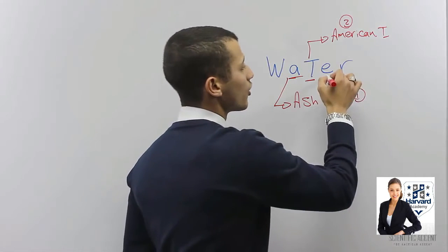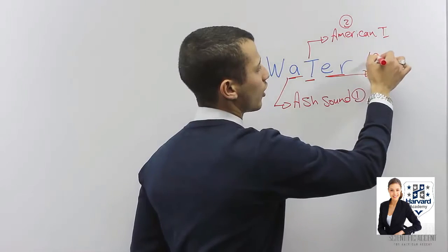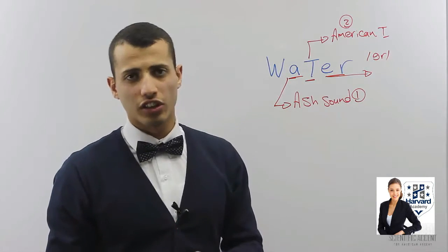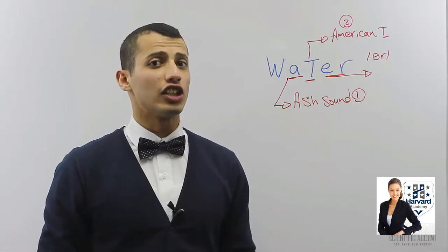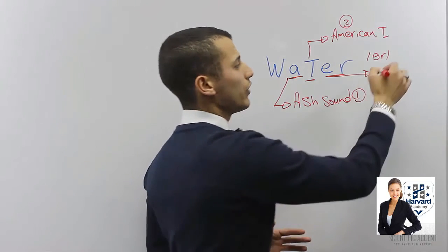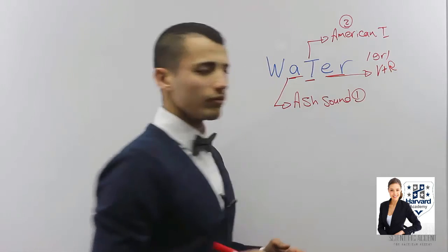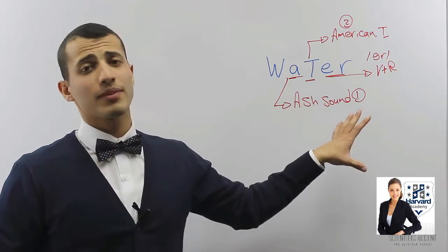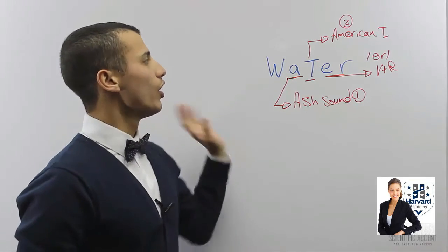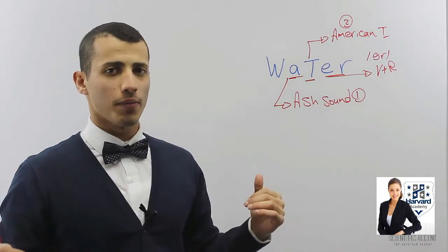Rule number three is called the ER sound. What is the ER sound? We pronounce the ER like 'er' — not 'R.' We say 'er,' like you're going down. The rule is: whenever you see a vowel plus R, it's called the ER sound. There are some exceptions, but this is the most common rule. So now we can pronounce this word as 'water.'